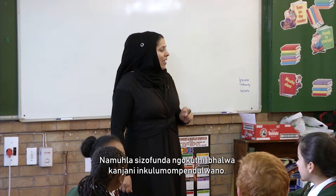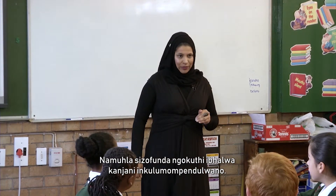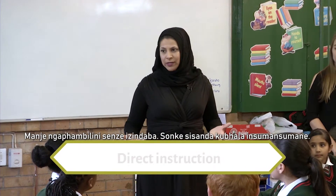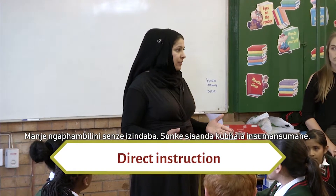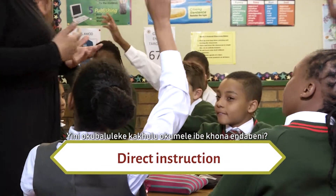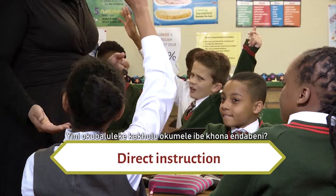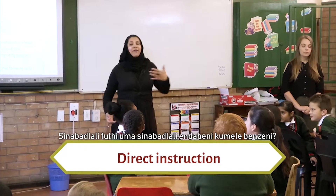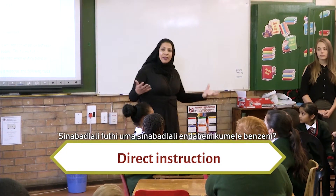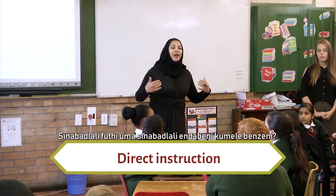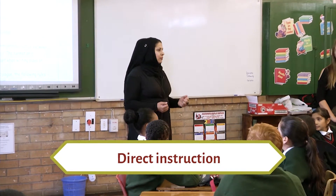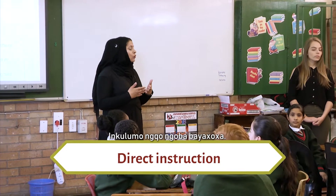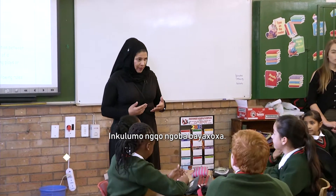Today we're going to be learning how to write a dialogue. In the past we've done stories — we've just all written a fairy tale. What's the most important thing to have in a story? The main part of a story is characters. And when we have characters in a story, what are they meant to do? Direct speech, because they are talking to each other.